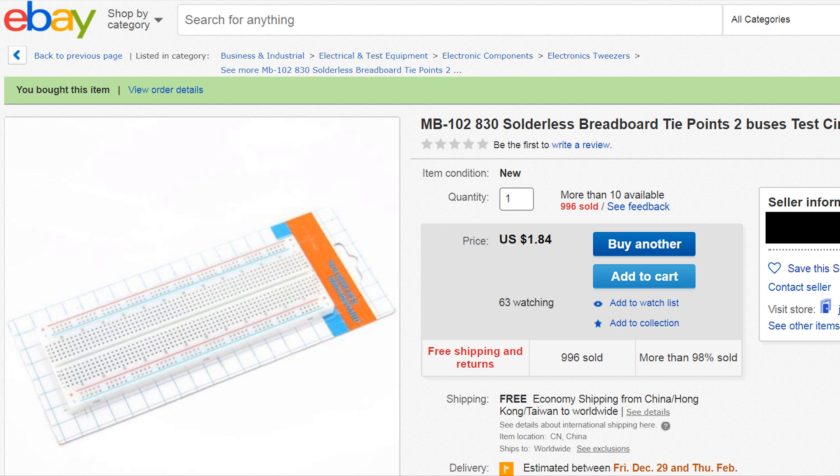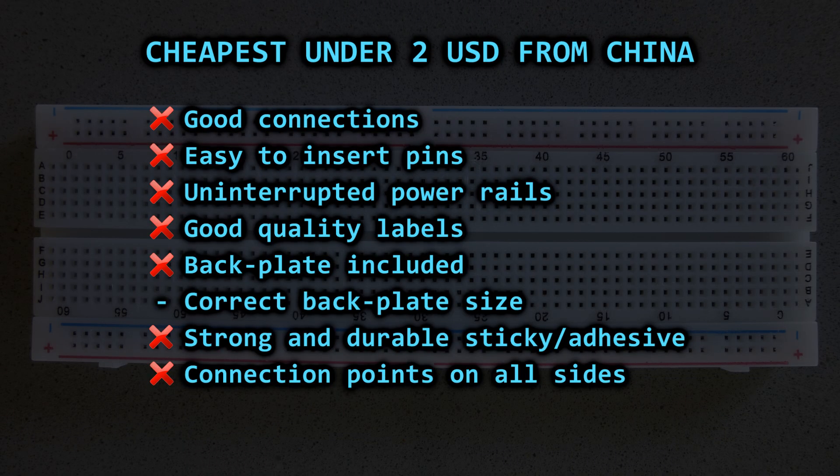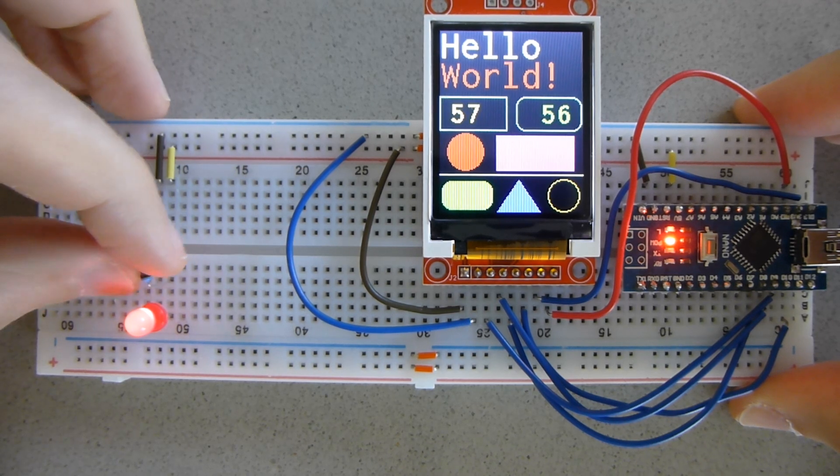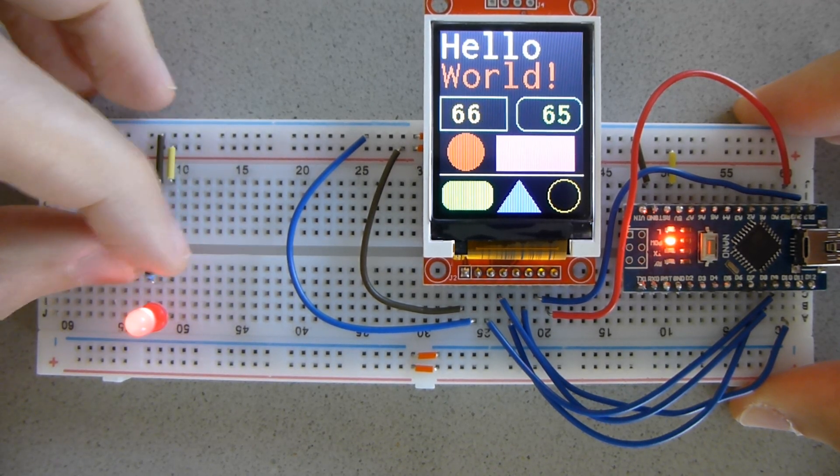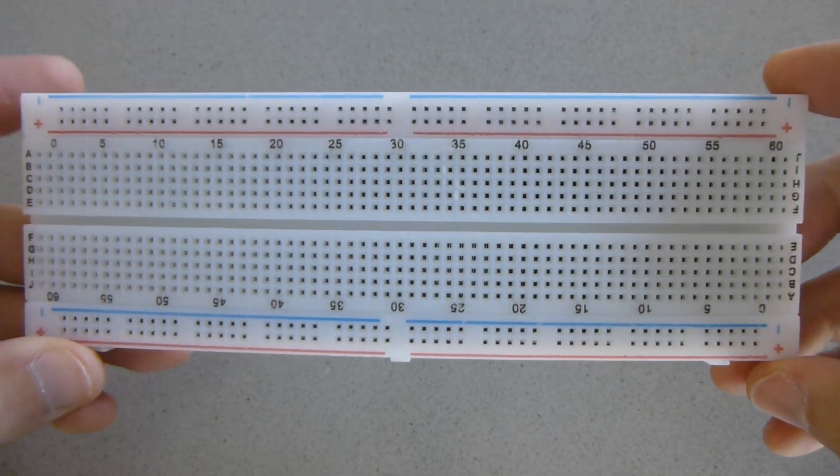In order from worst to best, first is the cheapest breadboard I could find on eBay from China. I spent less than 2 US dollars with free shipping, so I'm not surprised it failed on every aspect I could think of. The connections are horrible, the labels are a joke and it's just garbage. Do yourself a favor and stay away from them.